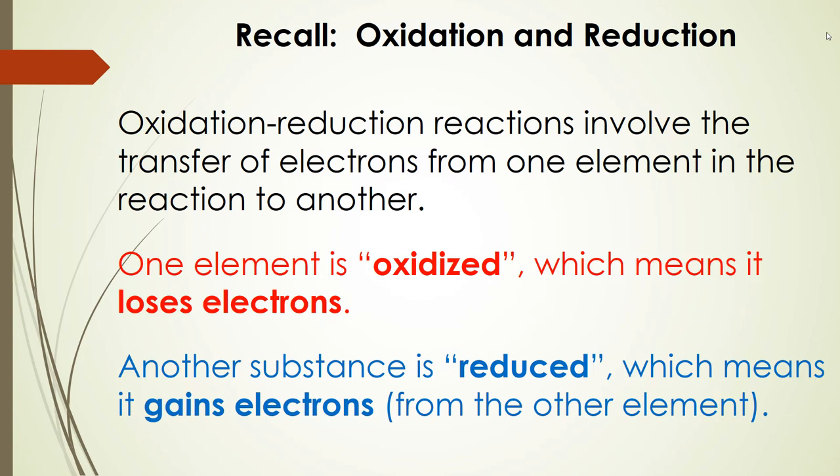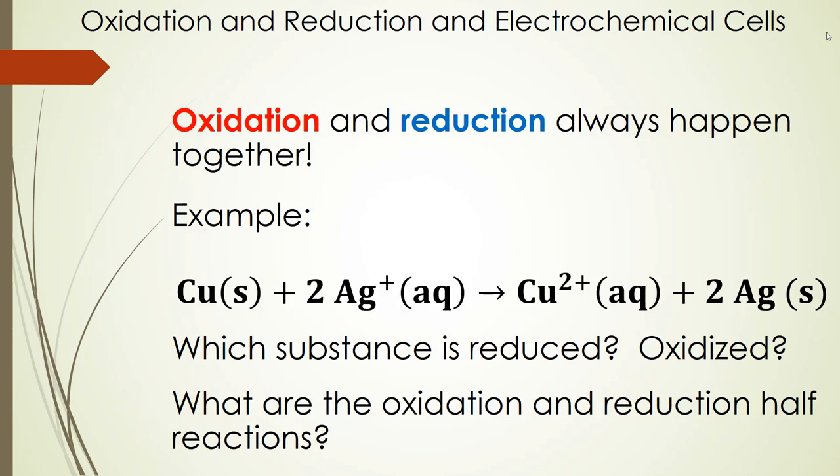In the same reaction another substance is reduced and that means that it gains electrons and it gets those electrons from the other element which is why they always have to go together. Just to reiterate, oxidation and reduction always happen together.